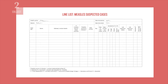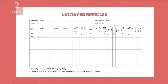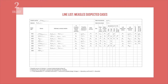This is a sample line list for measles. The unique case identification number is used to put cases in order and is not linked to the numbers on the immunization register or the AEFI cases in any way. On your line list, start with case 1, then case 2, and so on. Enter each case only once using a single case number. If a patient returns for a follow-up, you can update the original line for that case.